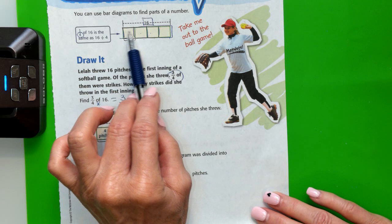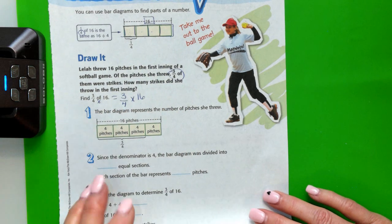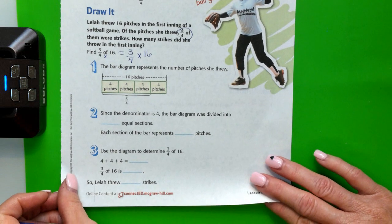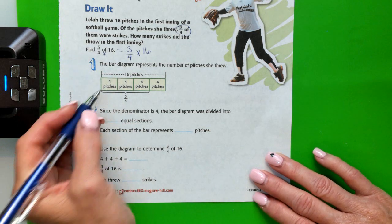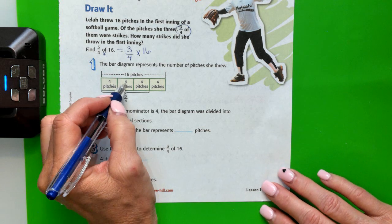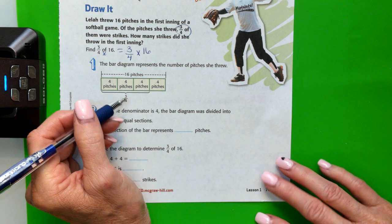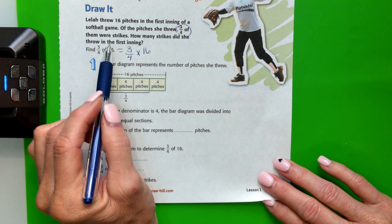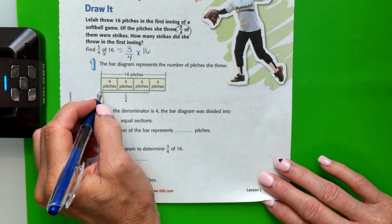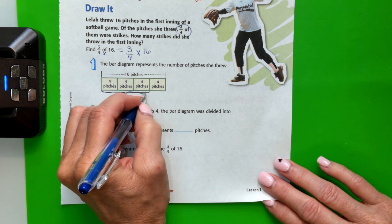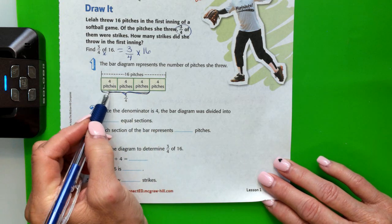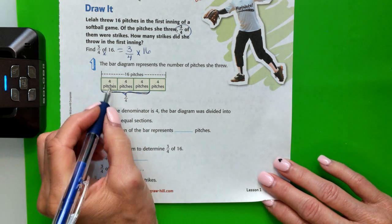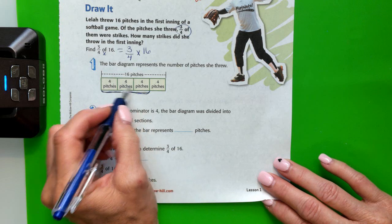One quarter. So how much is each section evenly? Well, we know that 4, 4 times is 16. So 4 pitches belong in each box. And she said 3 quarters of them were strikes. So we're going to mark off 3 quarters of the pitches. So 3 out of the 4 boxes were strikes.